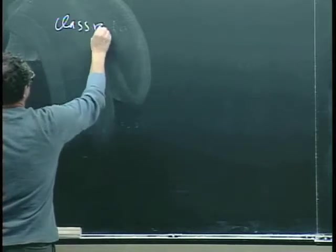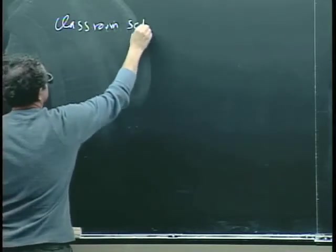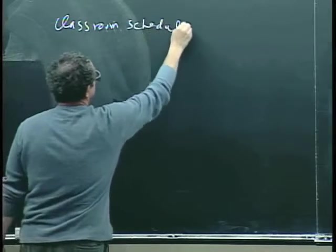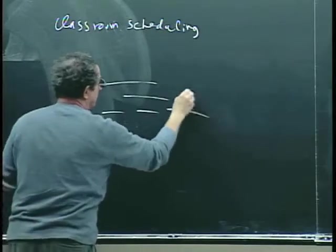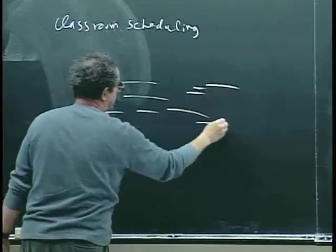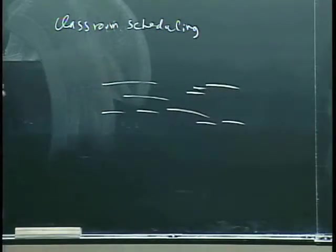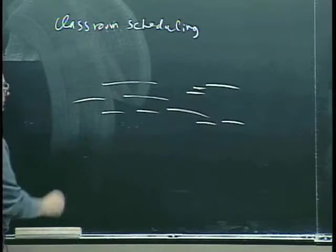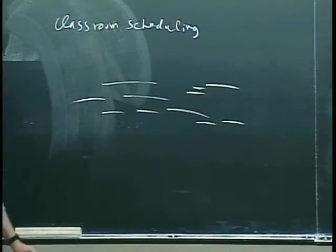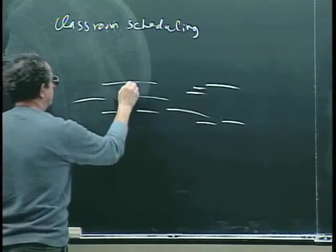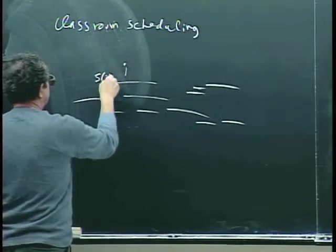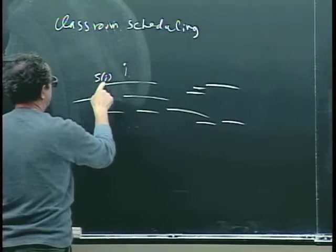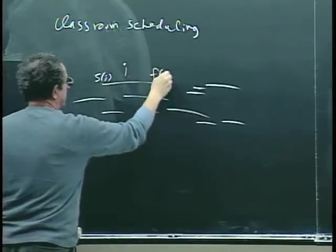The classroom scheduling problem. In this problem, we have classes that have to be scheduled. I don't know why their starting times and ending times are so irregular, but okay. You can think of your own application if it's not classrooms. This class, class i, starts at s(i) time and finishes at f(i) time.